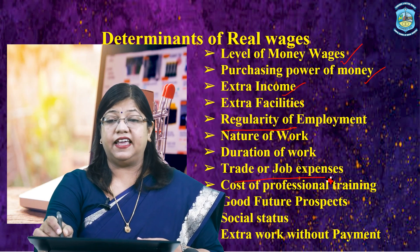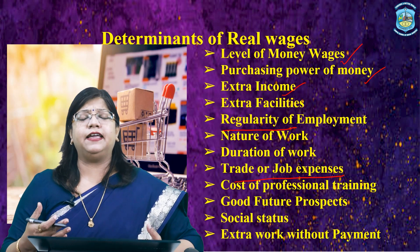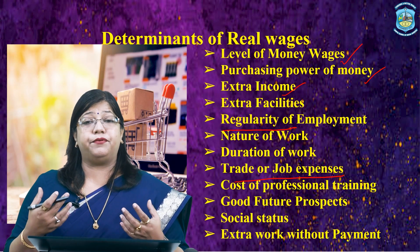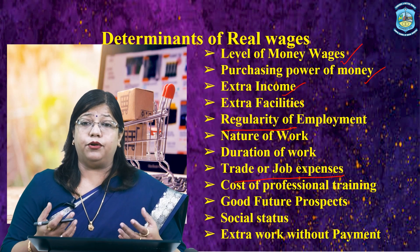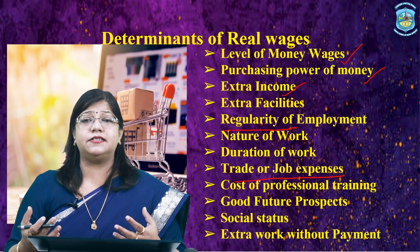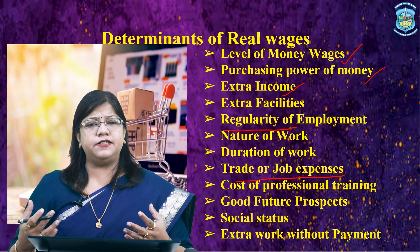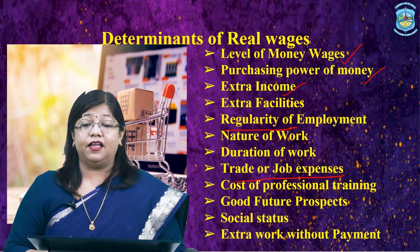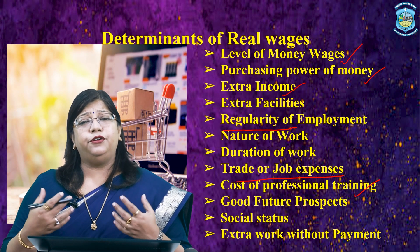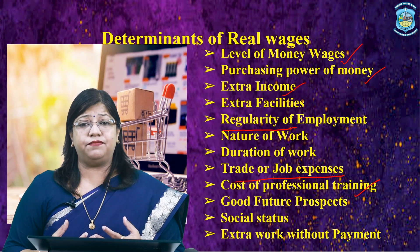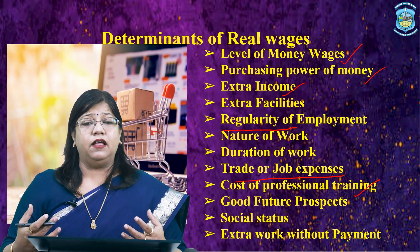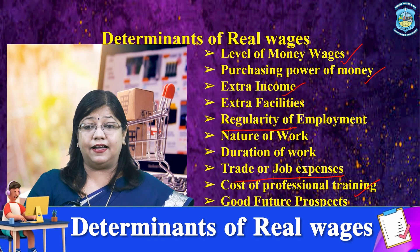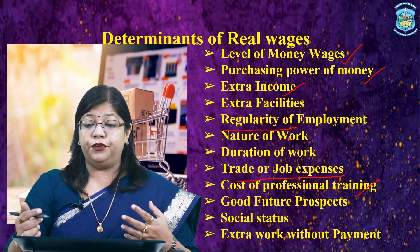Trade or job expenses also significantly influence the real wages of a worker. The real wages enjoyed by a worker depend also on professional expenses. A teacher has to spend on books, publications, and research journals to keep his or her knowledge updated, while an officer getting an equal salary has no such expenses. To that extent, the officer's real income is higher. The cost of professional training is also a determinant — doctors, engineers, and lawyers spend large amounts of money on training and a large number of years during their studies. In calculating their real income, the cost of training should be deducted from their money wages.